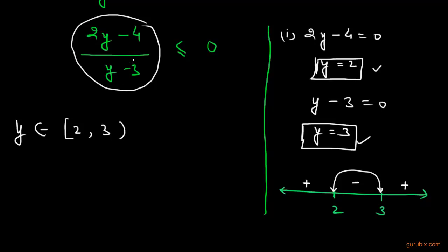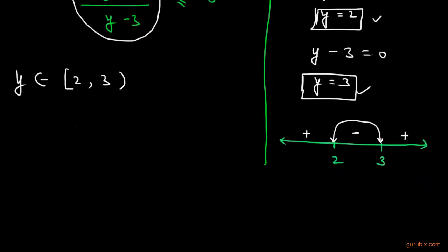Because at 3, this linear inequality does not exist. Or we can say that y is greater than or equals to 2 but less than 3.